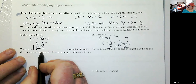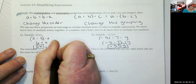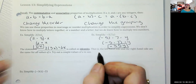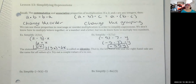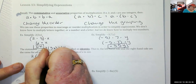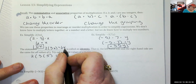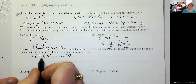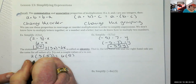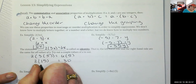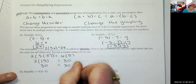The statement two times 3x equals 6x is called an identity — the left-hand side and the right-hand side are the same for all values of x. Let's try out a couple values. If we say two times three times five equals six times five: three times five is 15, two times 15 is 30, and six times five is 30. That checks out.